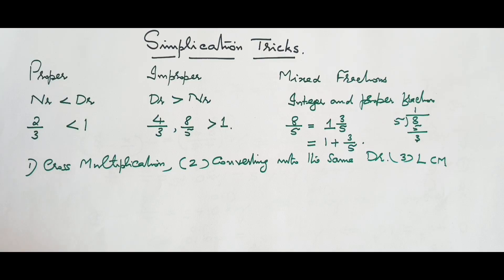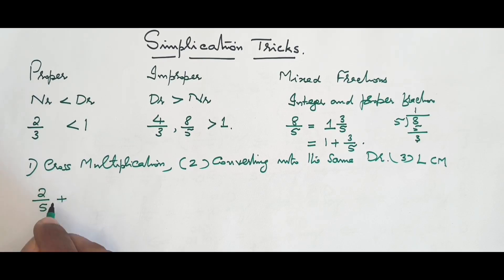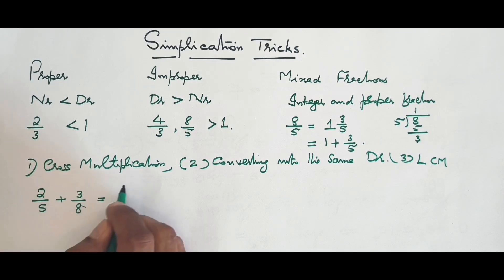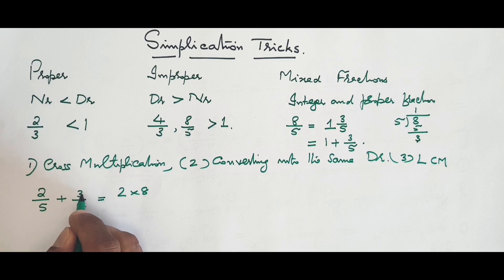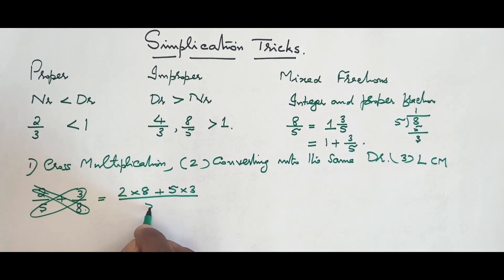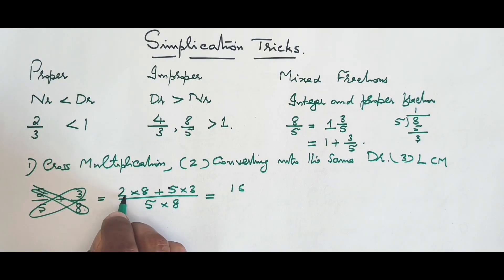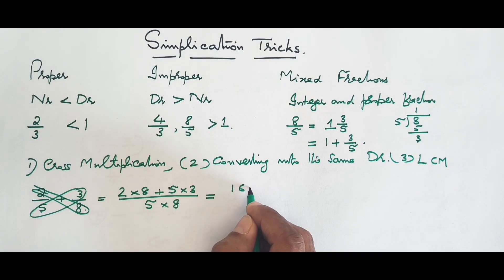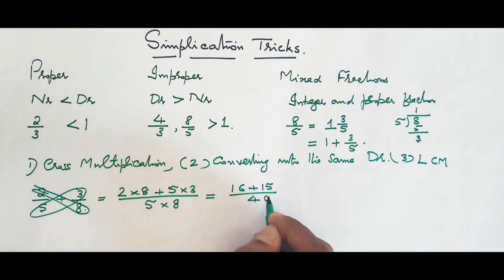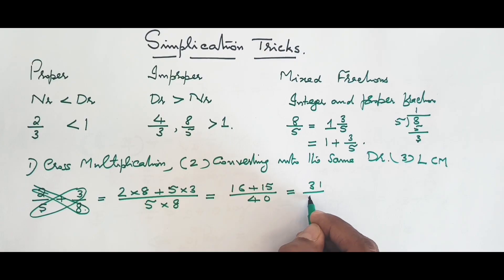Let me begin with a few simple examples. Look at these two fractions: two over five to be added to three over eight. In cross multiplication, you cross multiply two and eight, then cross multiply five and three, and write the denominator as five multiplied by eight. So: 2×8 = 16, 5×3 = 15, and 5×8 = 40, giving 31 over 40.